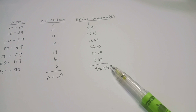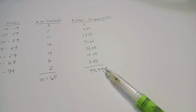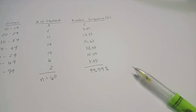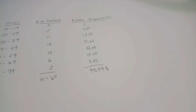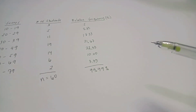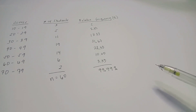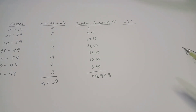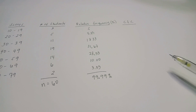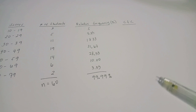Next, we are going to find the less than cumulative frequency. The less than cumulative frequency is obtained by simply adding the absolute frequencies of the classes starting from the lowest class to the highest class.